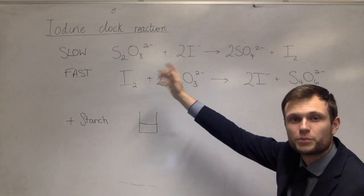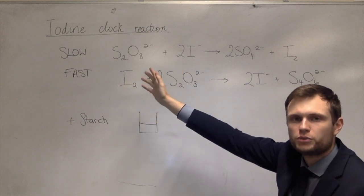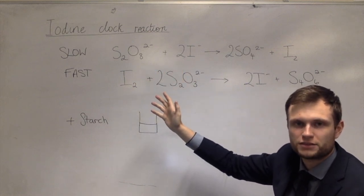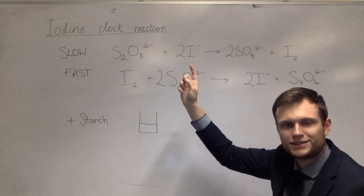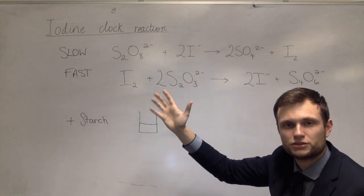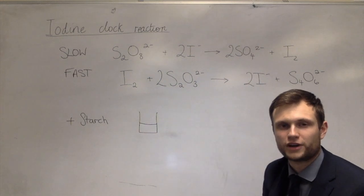The reaction is set up so that there is more peroxidised sulfate than there is thiosulfate. The top reaction will continue creating iodine and the bottom reaction will stop when the thiosulfate runs out.